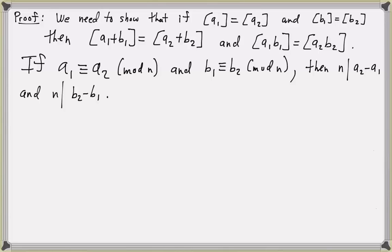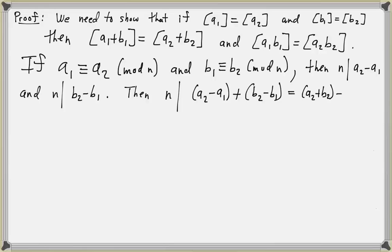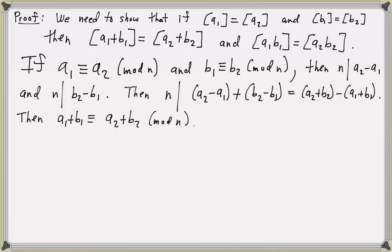Then n will divide the sum: n divides a2 minus a1 plus b2 minus b1. Rearranging these terms, this equals a2 plus b2 minus the quantity a1 plus b1. But this is the definition of a1 plus b1 being congruent to a2 plus b2 mod n. So this shows that addition of congruence classes is well defined — the class of a1 plus b1 equals the class of a2 plus b2.